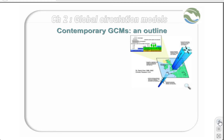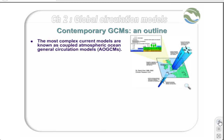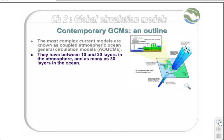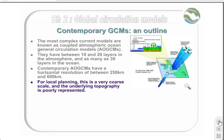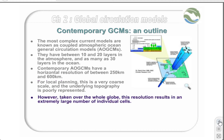Global circulation models involve incredibly complex calculations of atmospheric functions. The most complex current models are known as Coupled Atmospheric Ocean General Circulation Models, or AOGCMs. They have between 10 and 20 layers in the atmosphere, and as many as 30 oceanic layers. Contemporary AOGCMs have a horizontal resolution of between 600 and 250 kilometres. This scale is very coarse for local planning, and the underlying topography is poorly represented. If necessary, results can be scaled down post hoc using a series of modelling functions or by using regional modelling, but this is a complex and as yet relatively inaccurate process. However, taken over the whole globe, this resolution results in an extremely large number of individual cells — at least 1.5 million oceanic cells and approximately 250,000 atmospheric cells.